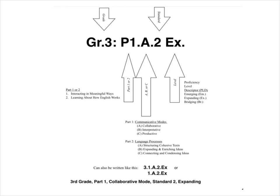So again, for this example, we have grade 3, Part 1, A for collaborative communicative mode, standard 2, expanding. But if you look at the bottom, it could also be written like this: you don't have to say GR for grade — you could just write 3.1.A.2.expanding.